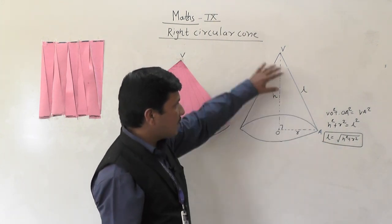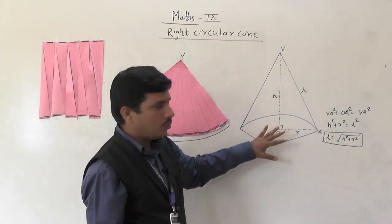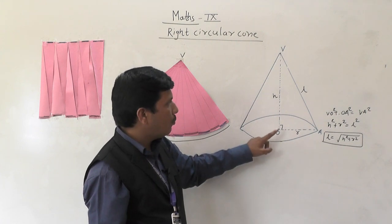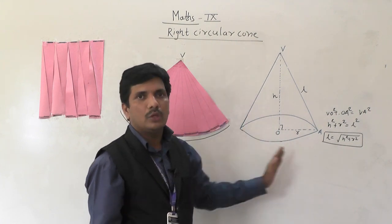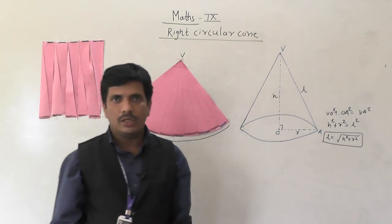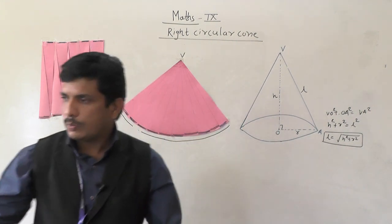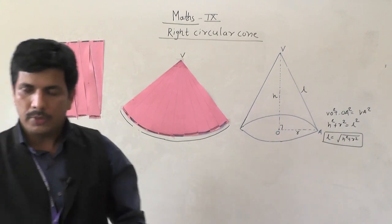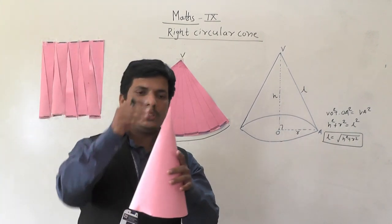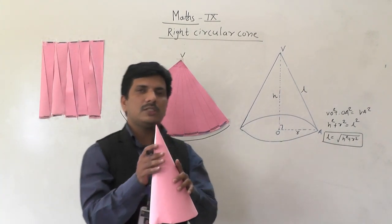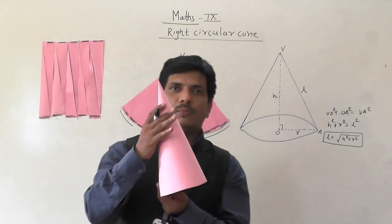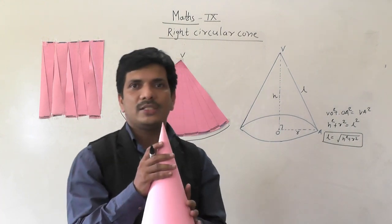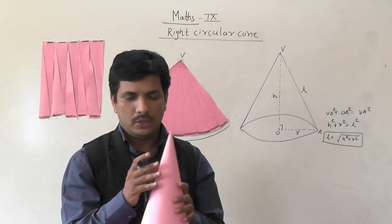This is the right circular cone. Why? Because this height is perpendicular to the base. Height is perpendicular to the base. This is an example — this is like a joker cap. This is an example of a right circular cone.